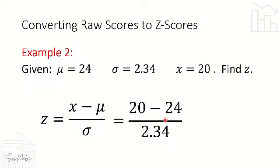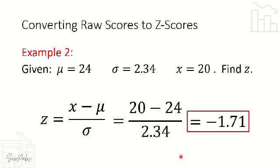Is a negative Z score possible? Yes, it is possible — because those are the scores lower than the mean, the scores on the left side of our normal curve. So 20 minus 24 divided by 2.34 is equal to negative 1.71. The Z score equivalent of 20 is negative 1.71.